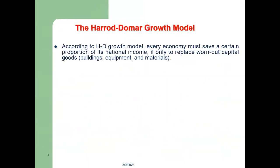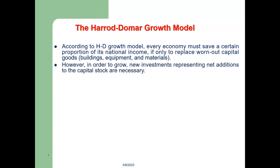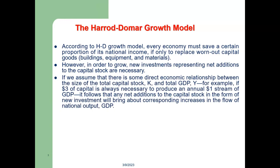According to the Harrod-Domar growth model, every economy must save a certain proportion of its national income, if only to replace worn-out capital goods including buildings, equipment, and materials. However, in order to grow, new investments representing net additions to the capital stock are also necessary. If we assume there is some direct economic relationship between the size of total capital stock K and total GDP Y —